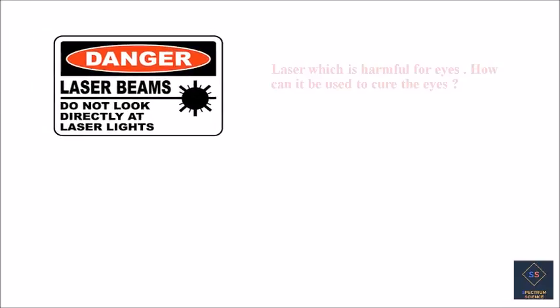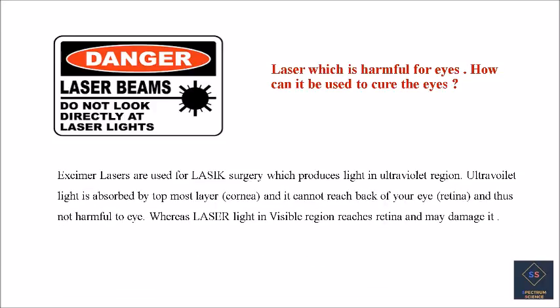So you might be thinking: how can laser, which is considered dangerous for eyes, actually cure them? Laser light considered dangerous lies in the visible region — it reaches the retina and may damage it. However, the laser used for eye surgery lies in the ultraviolet region. This ultraviolet light is absorbed by the topmost layer, the cornea, and cannot reach the back of your eye, the retina, and is thus not harmful.